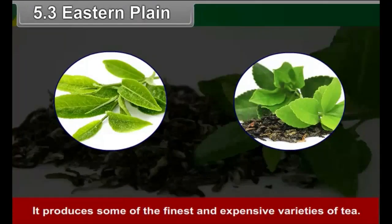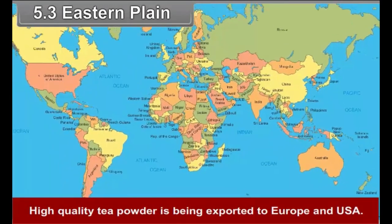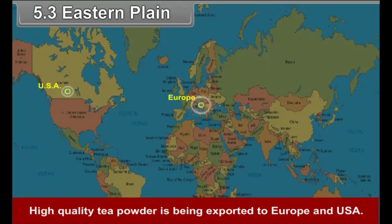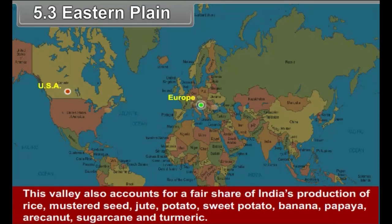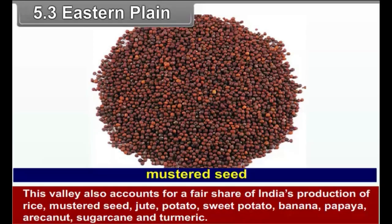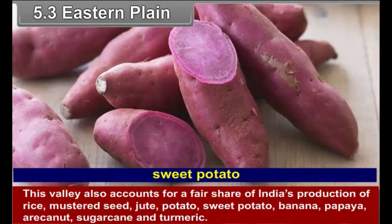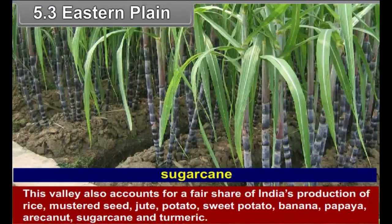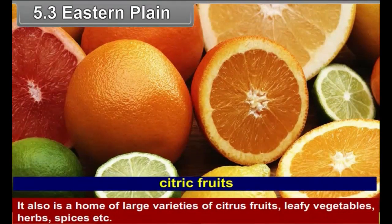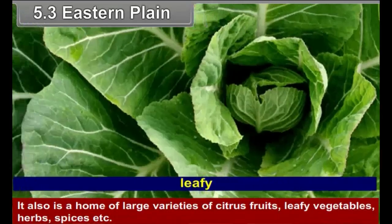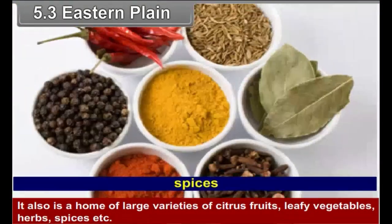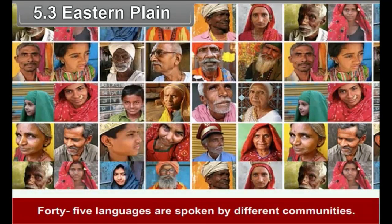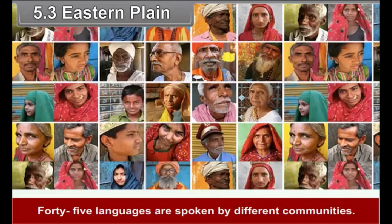Assam produces some of the finest and most expensive varieties of tea. High quality tea is being exported to Europe and USA. This valley also accounts for a fair share of Indian production of rice, mustard seed, jute, potato, sweet potato, banana, papaya, sugarcane and turmeric. It is also home to a large variety of citrus fruits, leafy vegetables, herbs, spices, etc. 45 languages are spoken by different communities; Assamese and Bengali are the major languages spoken in the region.